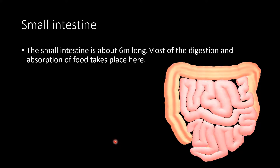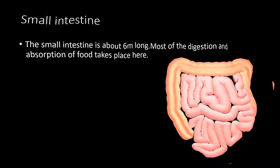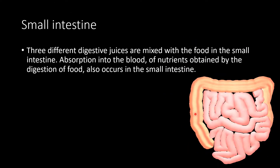Now let us understand about the small intestine. The small intestine is about 6 meters long. Most of the digestion and absorption of food take place here. Three different digestive juices are mixed with food in the small intestine. Absorption into the blood of nutrients obtained by digestion also occurs in the small intestine.